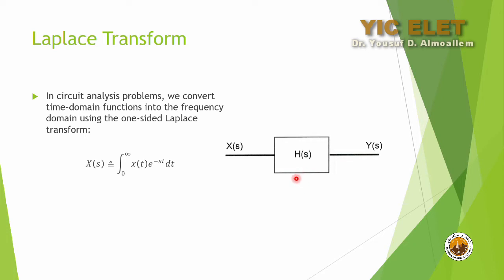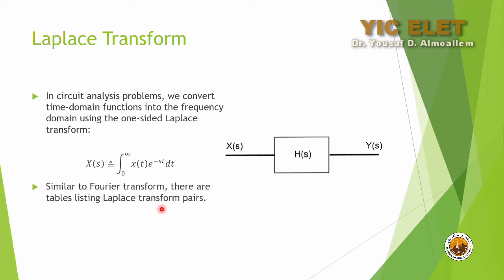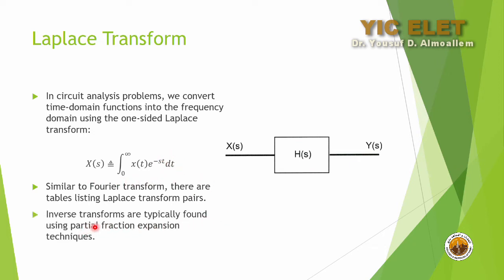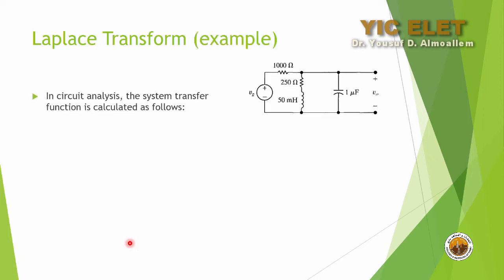In electrical circuits, we can find the transfer function or the input/output at the s-domain using this equation. Similar to the Fourier transform, there are tables listing Laplace transform pairs to avoid doing the integral repeatedly. The inverse Laplace transform is typically found using partial fraction expansion techniques, and these tables make it easy to transform back and forth between time domain and s-domain.